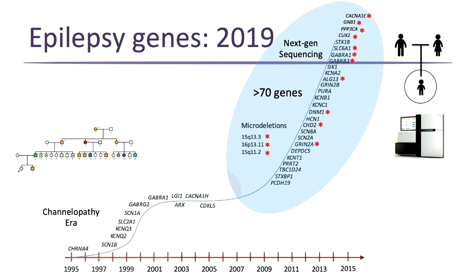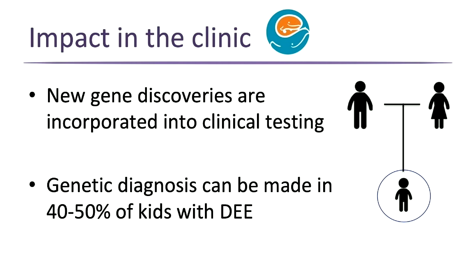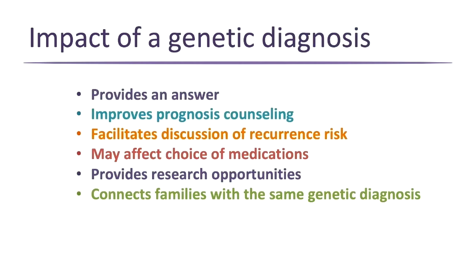In the clinic, this has been quite significant. Whereas 10 years ago we might test one gene and say we don't know 90% of the time, today we can sequence hundreds of genes at once using the same technology from the research lab — now available as a clinical test. We can now provide a genetic diagnosis for almost 50% of kids who come to clinic with one of these severe epilepsies, compared to a few percent 10 years ago. This has a huge impact on families and provides improved opportunities for counseling and care.